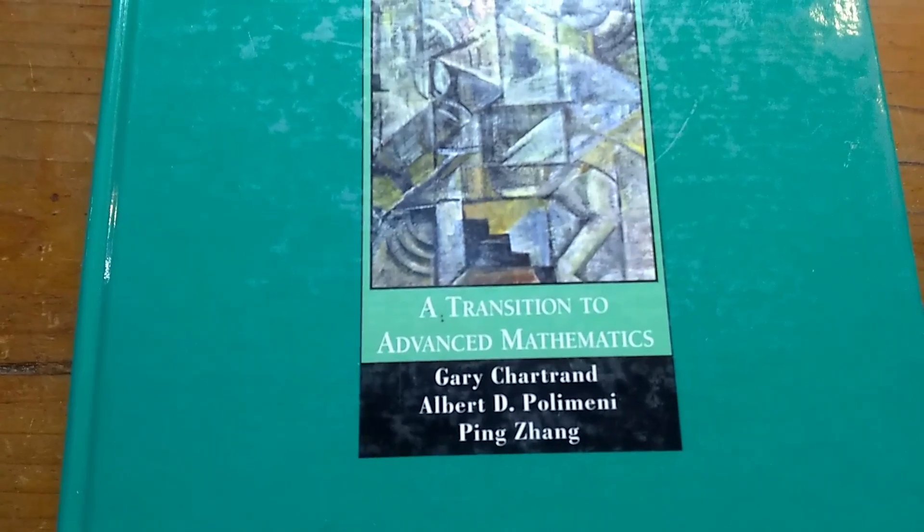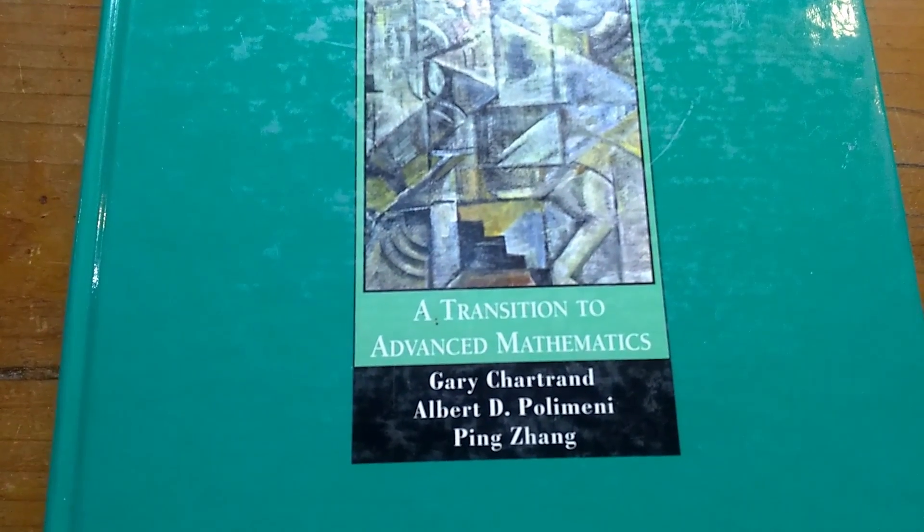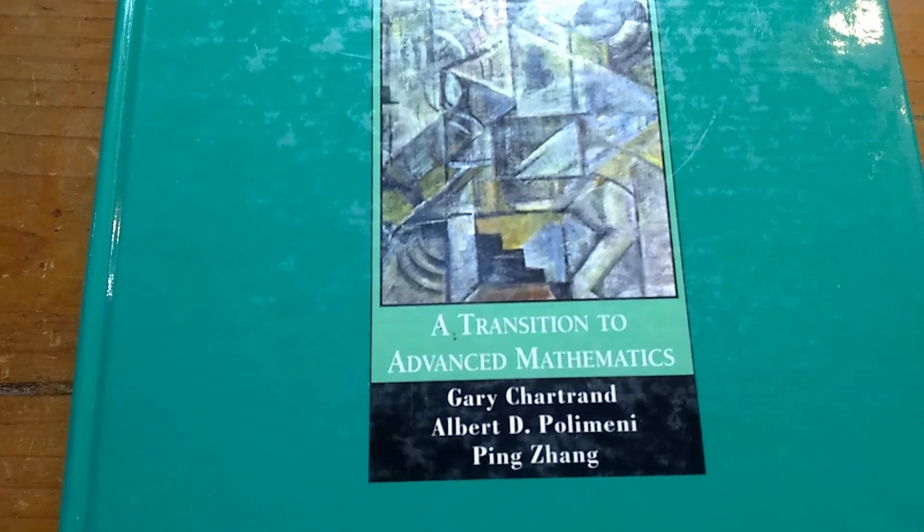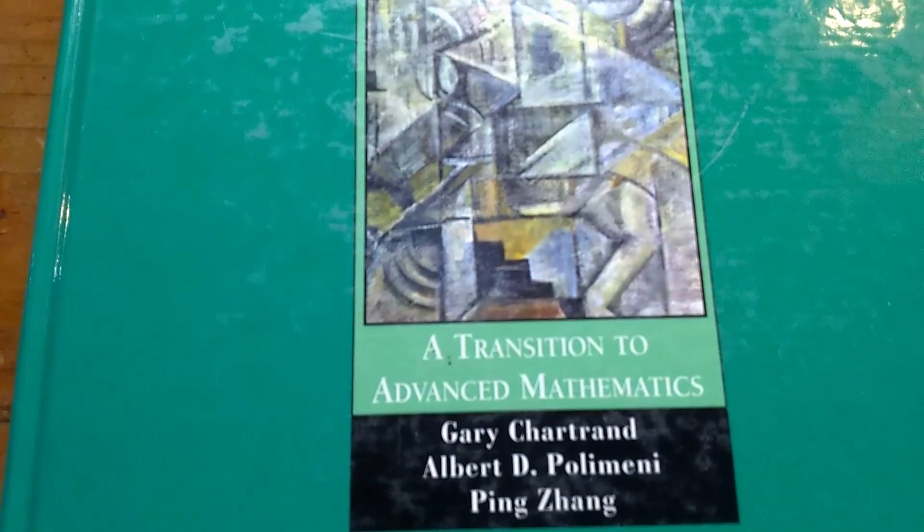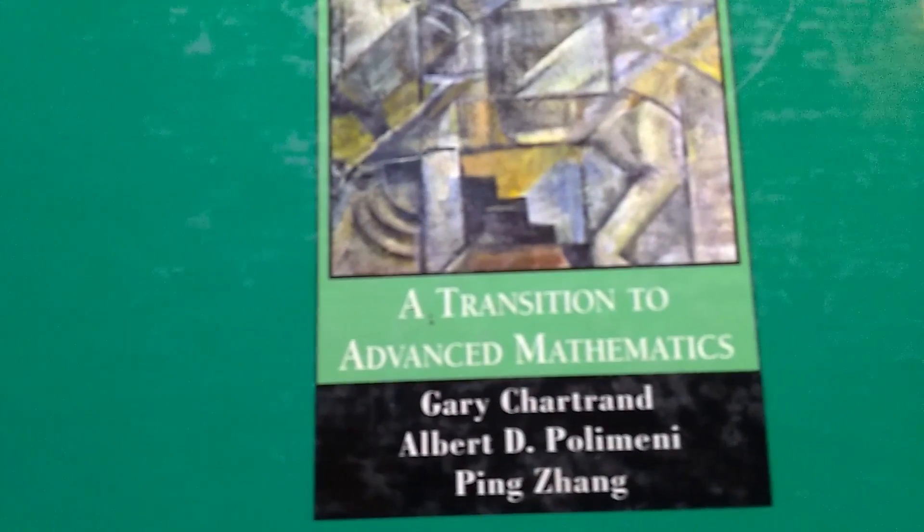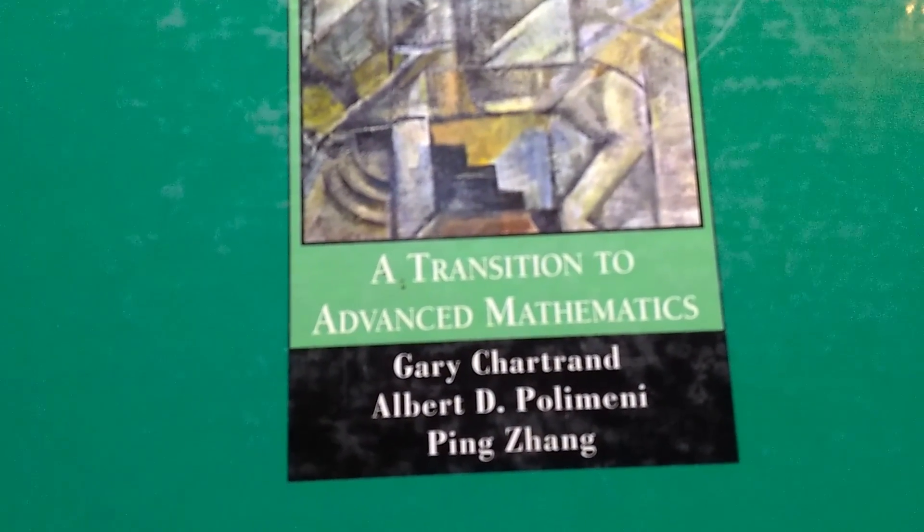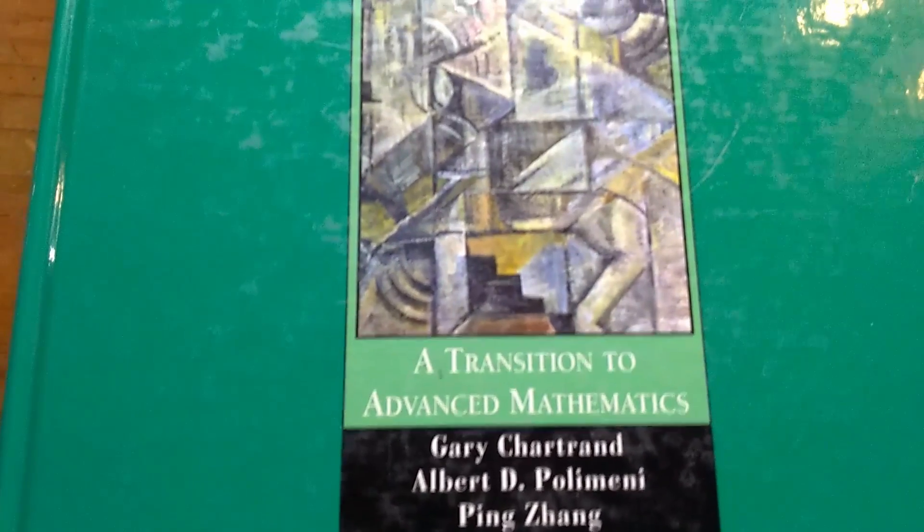So an excellent choice if you're deciding to learn how to write proofs. I would recommend getting this book and other proof writing books. But this is one that you can pick up for only a few dollars. It's called A Transition to Advanced Mathematics. And this is the Chartrand, Polimeni, and Zhang book. That's it.